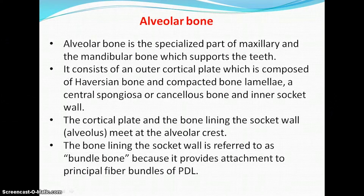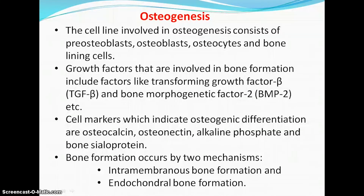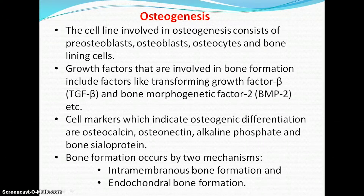The bone lining the socket wall is referred to as bundle bone because it provides attachment to the principal fiber bundles of the periodontal ligament. The growth factors involved in bone formation include transforming growth factor beta and bone morphogenetic proteins. Cell markers which indicate osteogenic differentiation include osteocalcin, osteonectin, alkaline phosphatase, and bone sialoprotein. Bone formation occurs by two mechanisms: intramembranous bone formation and endochondral bone formation.